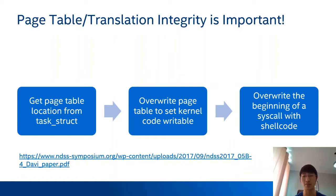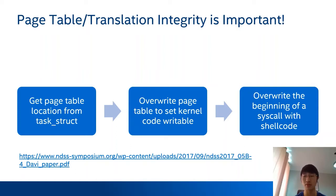First, the attacker can get the PageTable location from the TaskStruct. For example, there is an MMStruct pointer in TaskStruct, and from MMStruct we can locate the PageTable through the page. Then, the unprivileged attacker can override the page table to set kernel code writable, and then override the beginning of the syscall with shellcode. So as you can see, the integrity of PageTable translation is important. If the integrity isn't ensured, access control can be easily bypassed.